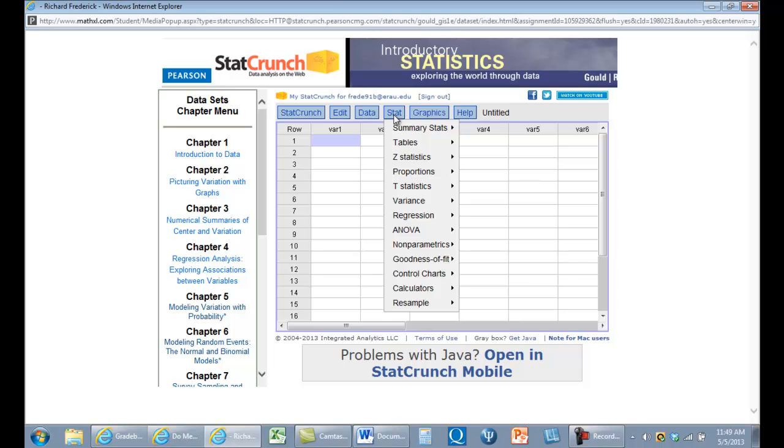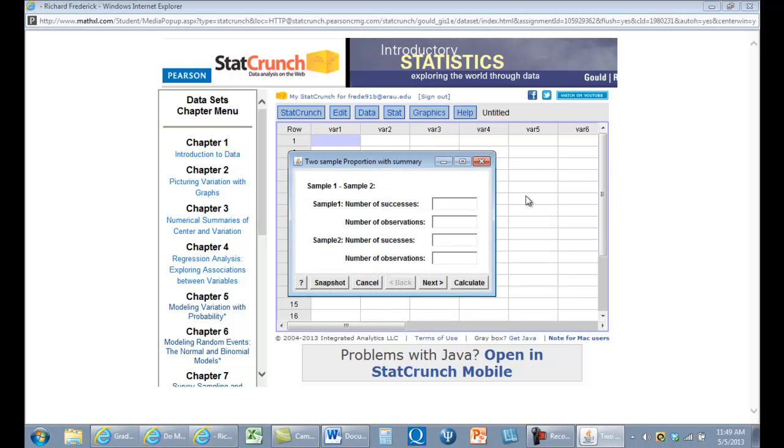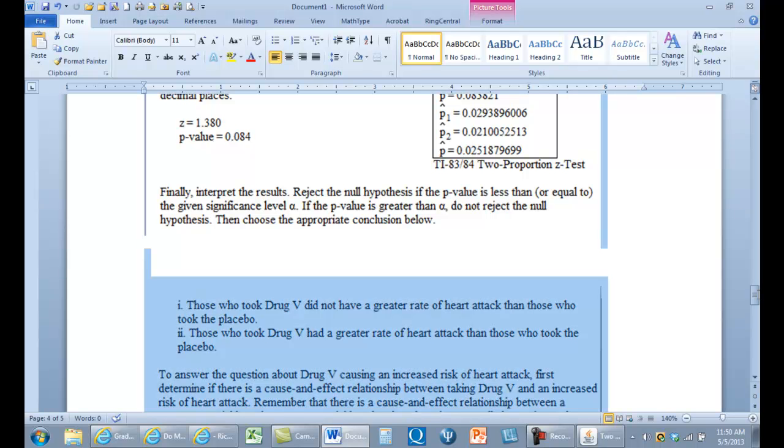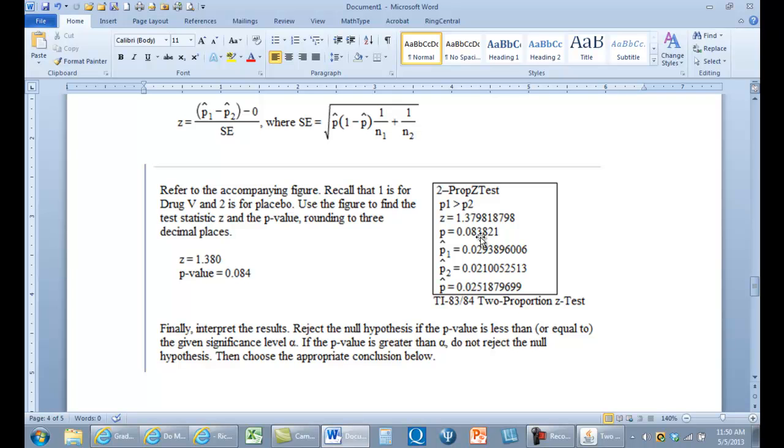So here's our StatCrunch. And we're going to go to proportions. We're going to go to two samples with a summary. But now it's just going to prompt us. What are the successes? In sample one, it was 39 heart attacks out of 1,327 people. And the other one was 28 out of 1,333. We're going to calculate. And so there's our Z value. 1.3798. If we go back here, we see that that's exactly correct. 1.3798.